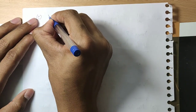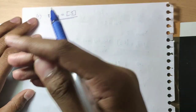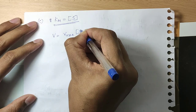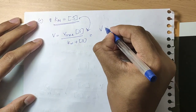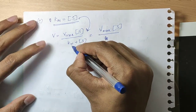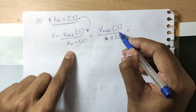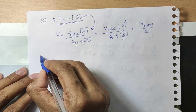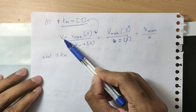Case C: when Km equals [S]. Substituting into the equation, V = Vmax·[S] / ([S] + [S]) = Vmax·[S] / 2[S] = Vmax/2. So Km is defined as the substrate concentration at which the velocity equals Vmax/2.